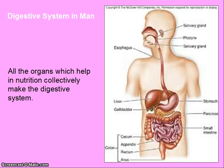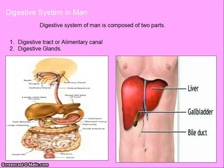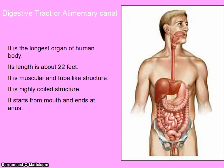Digestive system in man: all the organs which help in nutrition collectively make the digestive system. Digestive system of man is composed of two parts: one is digestive tract or elementary canal, and the other is digestive glands.